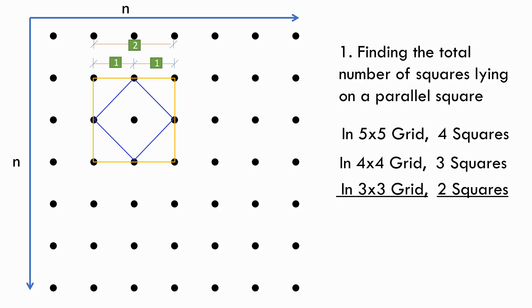What we can generalize from here is, the total number of squares lying on a parallel square is equal to the side length of the parallel square. That is 4 on a 5x5 square grid of side 4 units, 3 on a 4x4 square grid of side 3 units, 6 on a 7x7 grid of side 6 units, 98 on a 99x99 square grid of side 98 units, and so on.